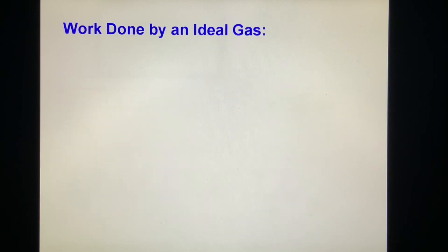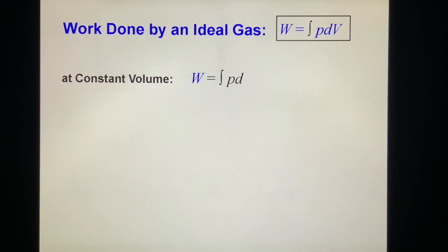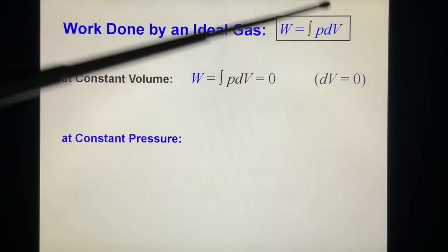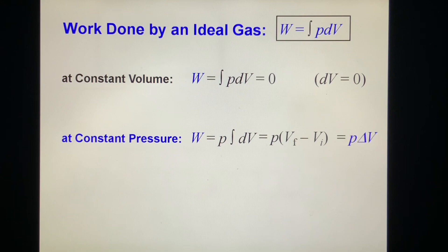Now let's calculate the work done by an ideal gas. Starting from the definition, W equals the integral of PdV. At constant volume, V does not change, so dV is zero. W equals zero. At constant pressure, P is constant, we can take it out. The integration of dV gives delta V. So we get P times V final minus V initial, which is P delta V. And work done by an ideal gas at constant temperature, which we just derived: W equals nRT log of V final over V initial. Different processes give different results.